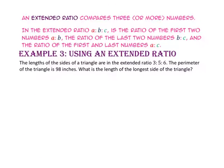An extended ratio compares three or more numbers. In the extended ratio A to B to C, there are really three ratios: the ratio of the first two numbers, A to B; the ratio of the last two numbers, B to C; and the ratio of the first and last numbers, A to C. In example 3, we will use an extended ratio.